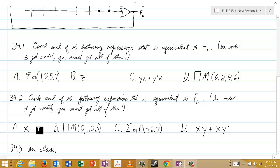The first choice for A is X. The second one is the product of the max term 0, 1, 2, 3.